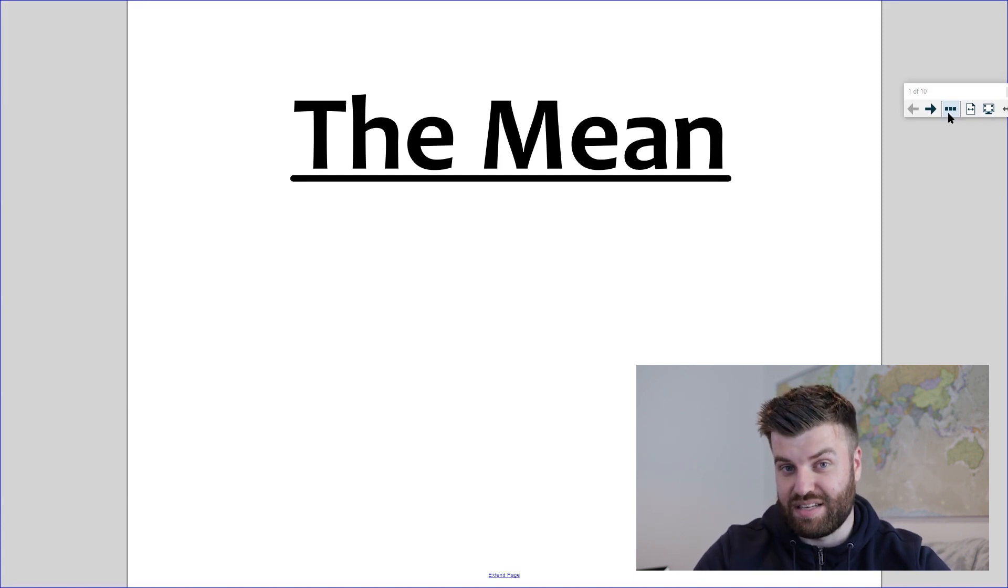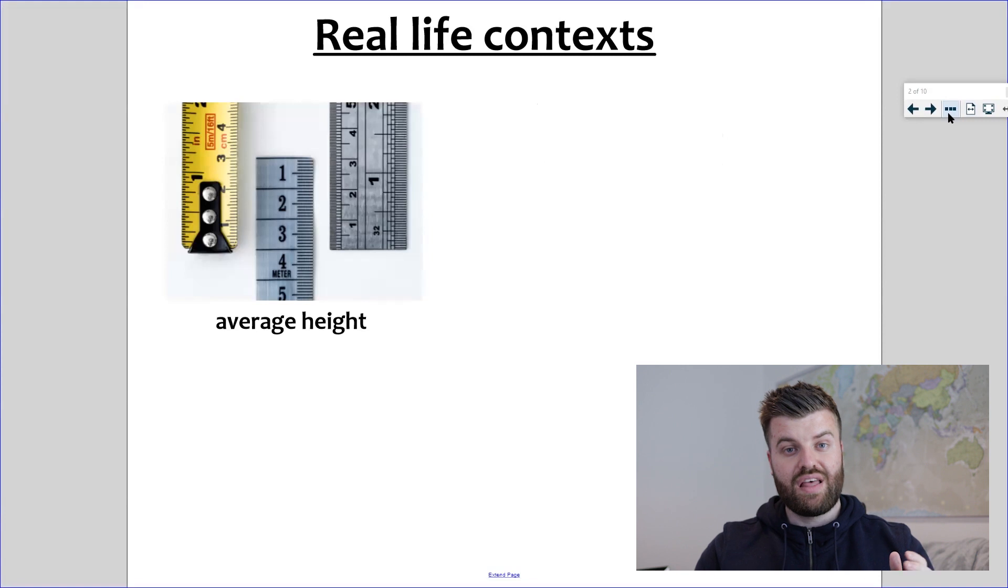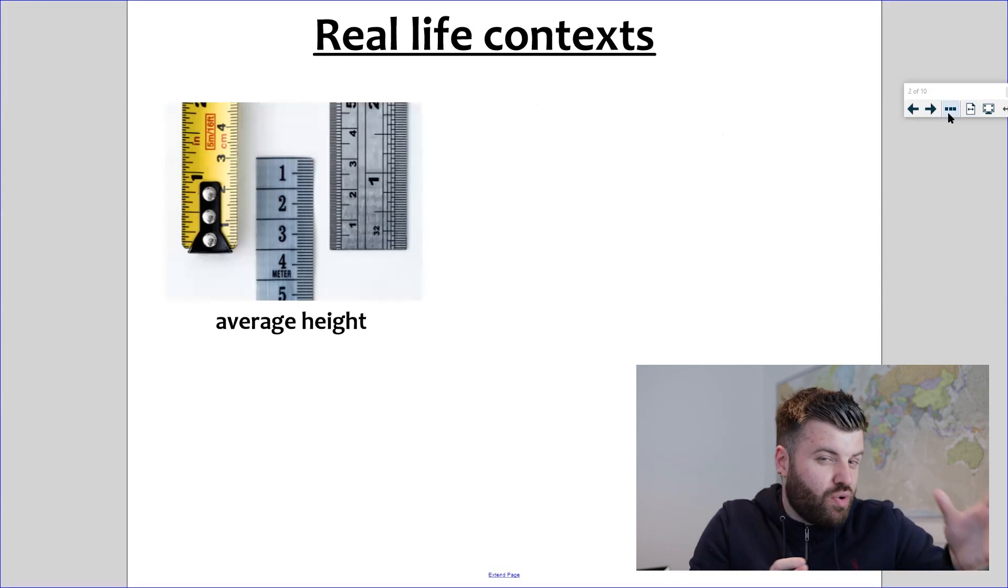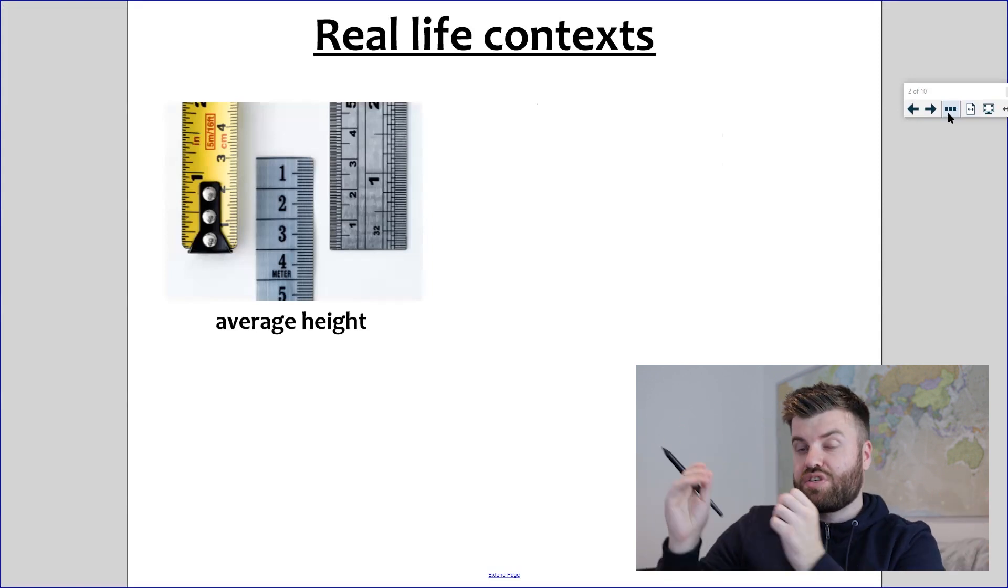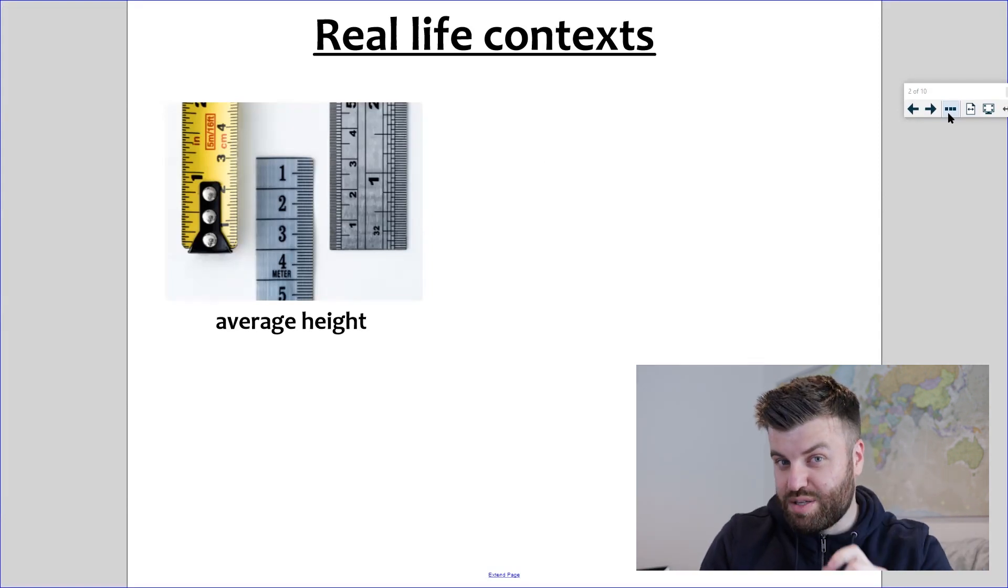The first thing I want to explain to you is when it's used in real-life contexts. You might already be thinking, ah, I've heard of the word average before, I kind of know what it means. Here are some real-life contexts for you. You might have heard of average height. If you have a classroom of children, their average height would be the rough size of them if you were to take it as a whole. So you might have the shortest child in the class, the tallest child in the class, and the average might be somewhere in the middle. Middle is going to be a key word.